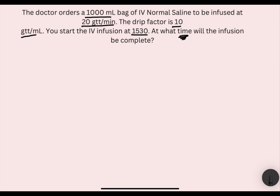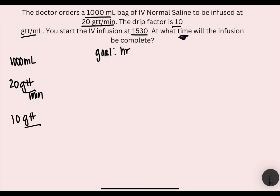So it's asking for time. That means our goal is to find hours. We will write out our relationships: 1000 milliliters is the bag — it's by itself. You have 20 drops per minute as the rate going in. And your drop factor is 10 drops per milliliter. We're looking for hours, but we don't have hours anywhere. We have minutes.